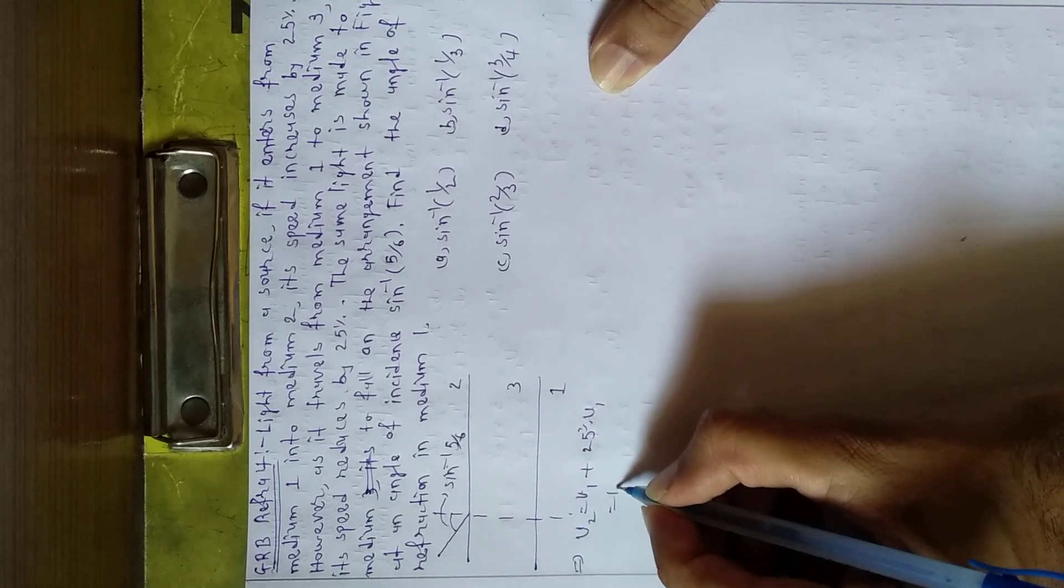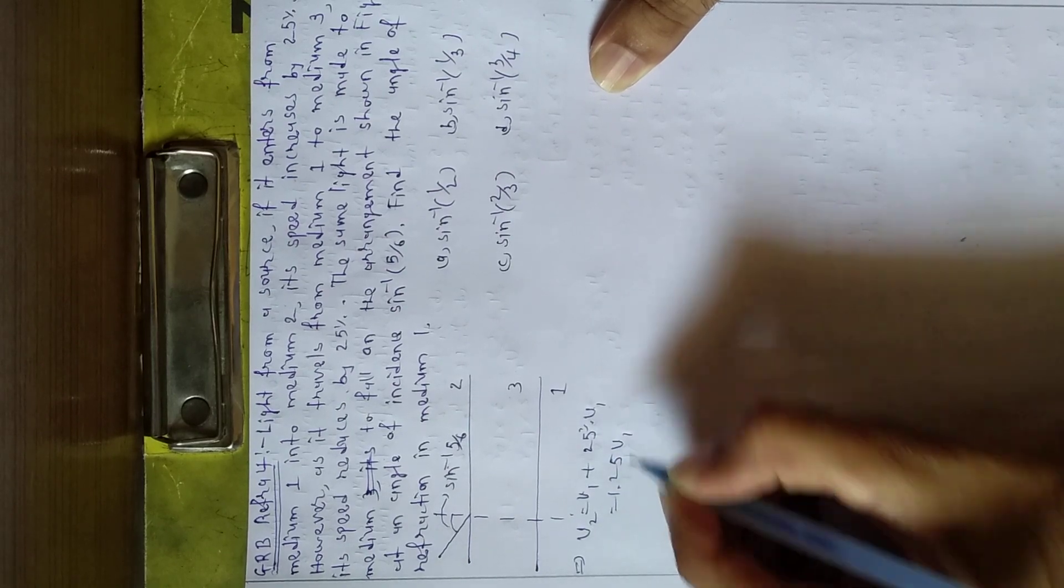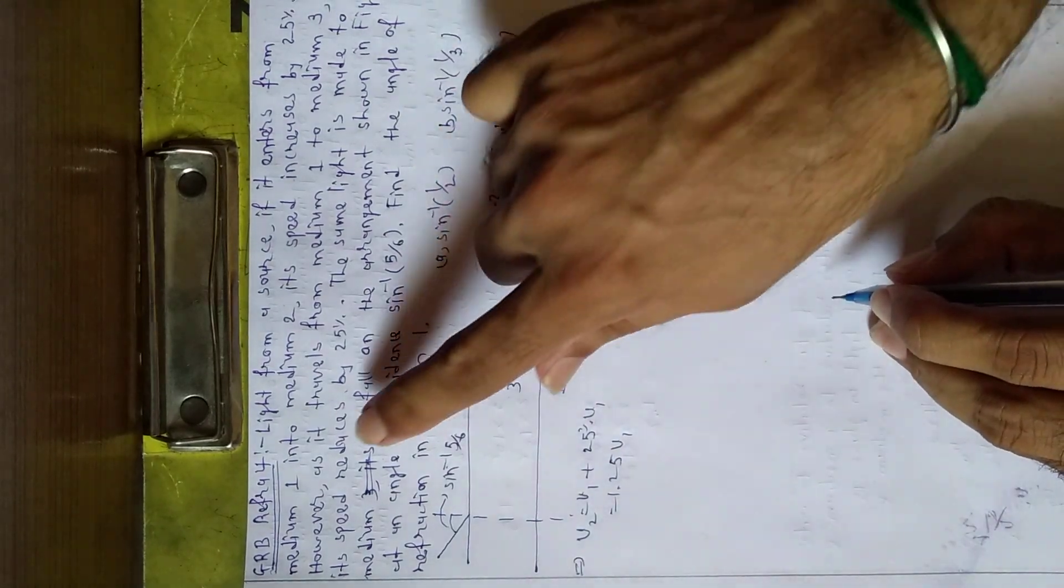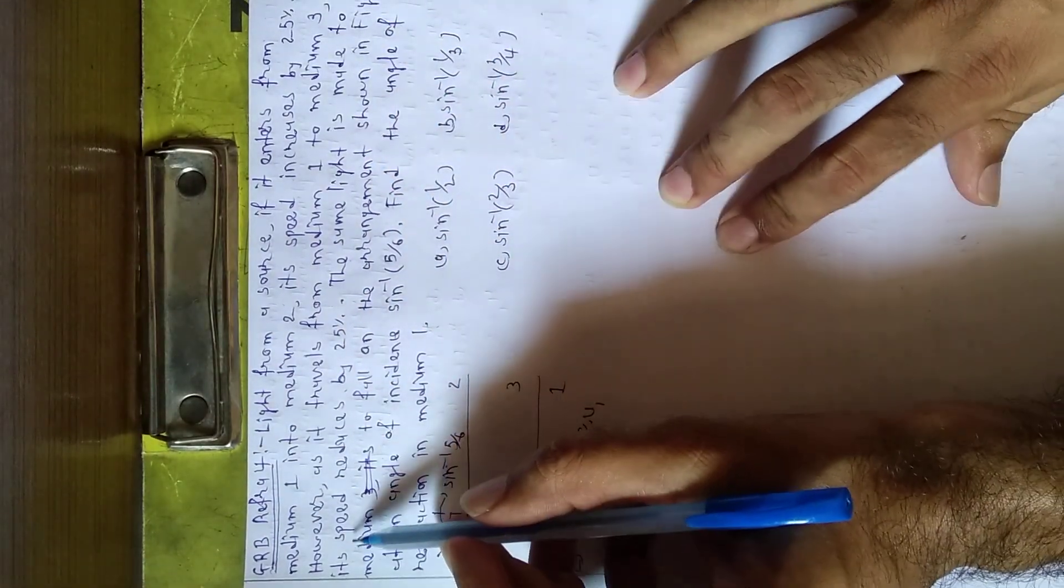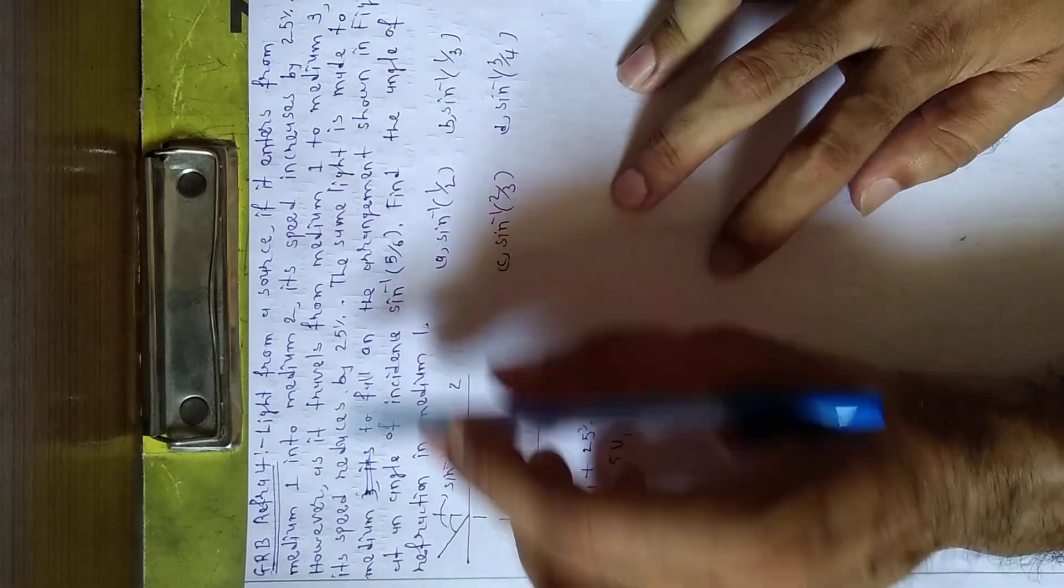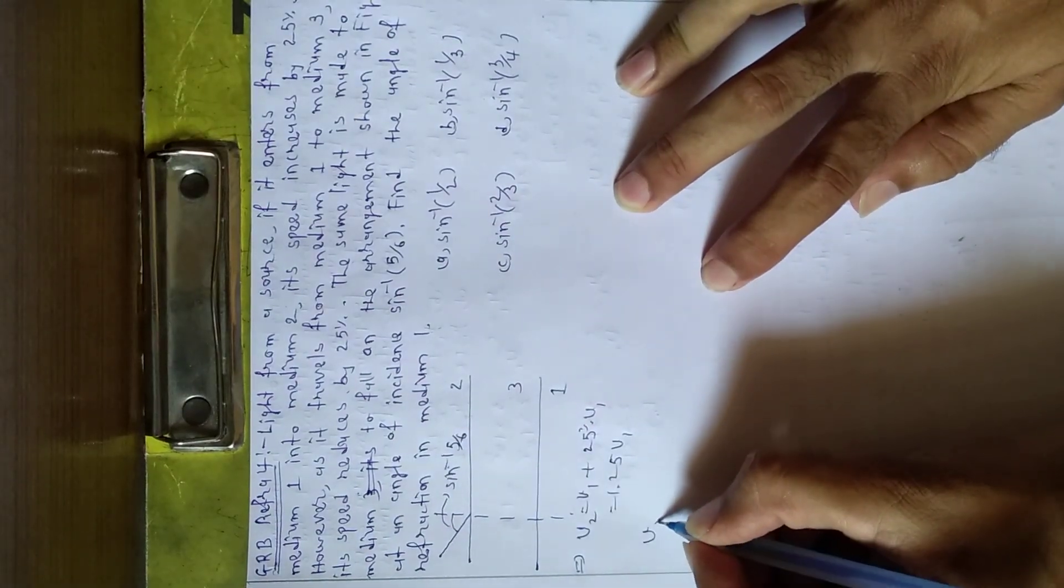Therefore, v2 equals 1.25 v1. However, as it travels from medium 1 to medium 3, its speed is reduced by 25%, therefore v3